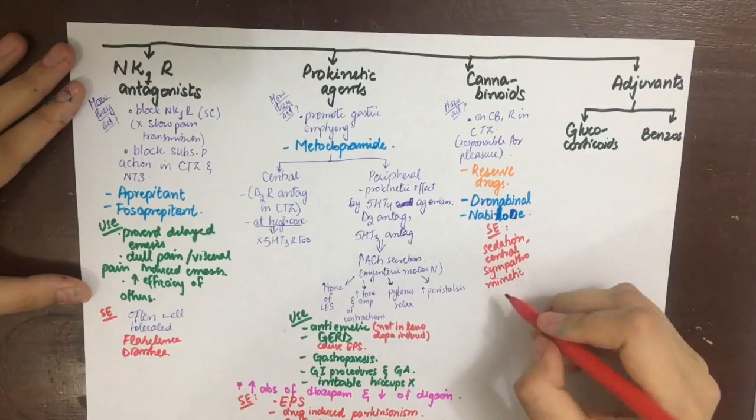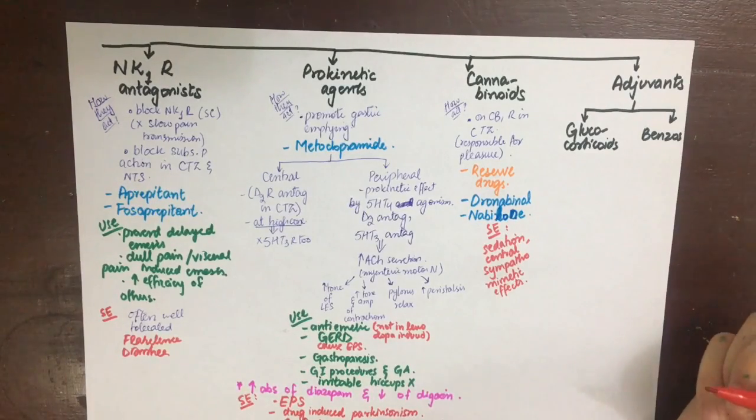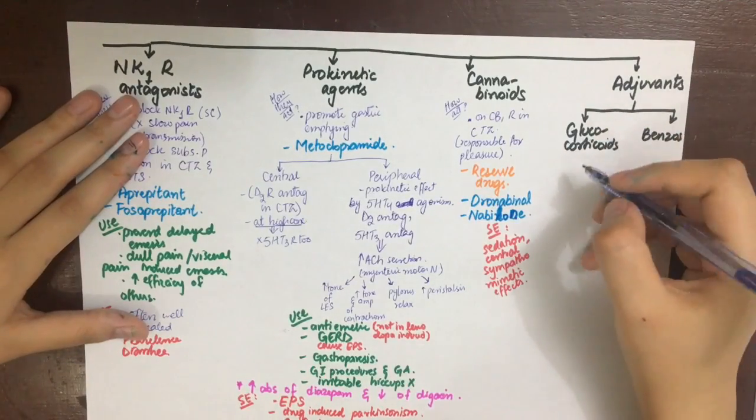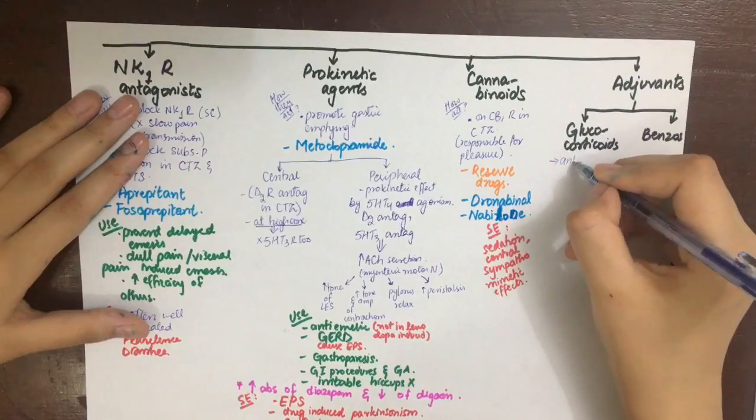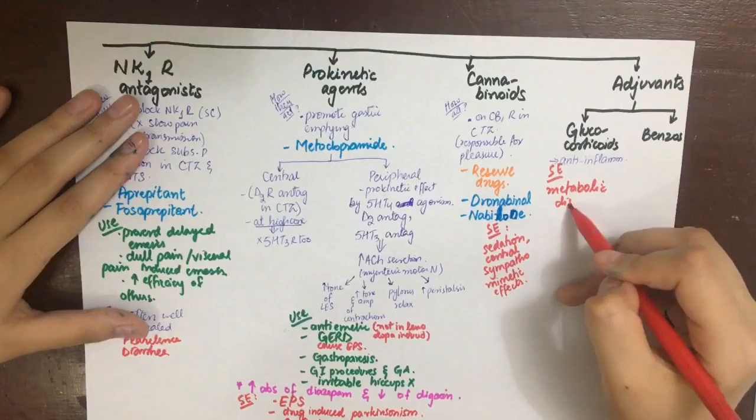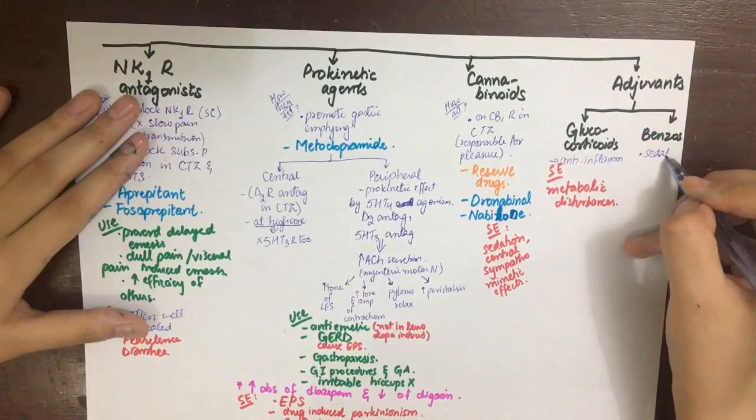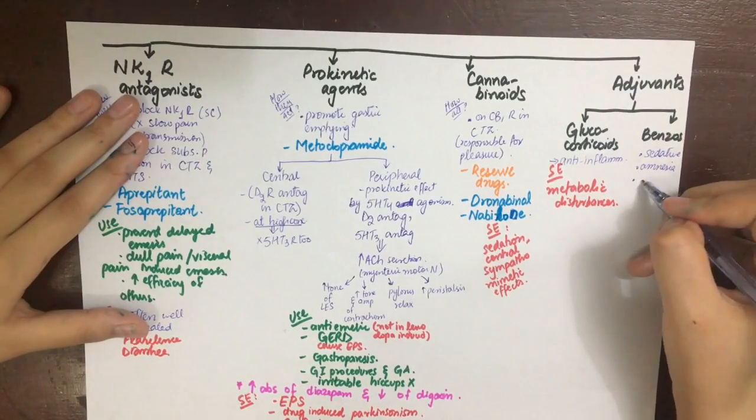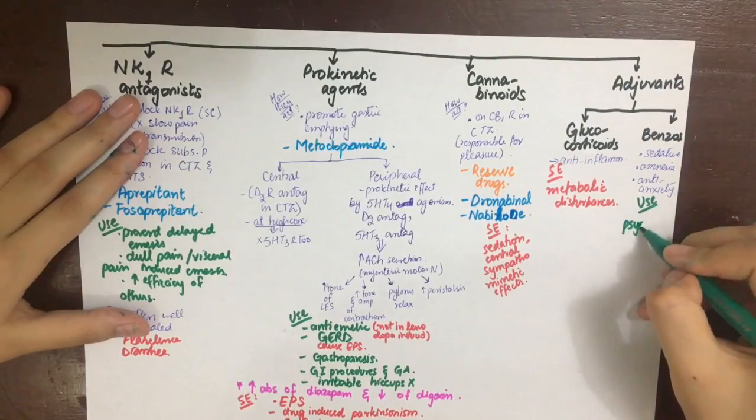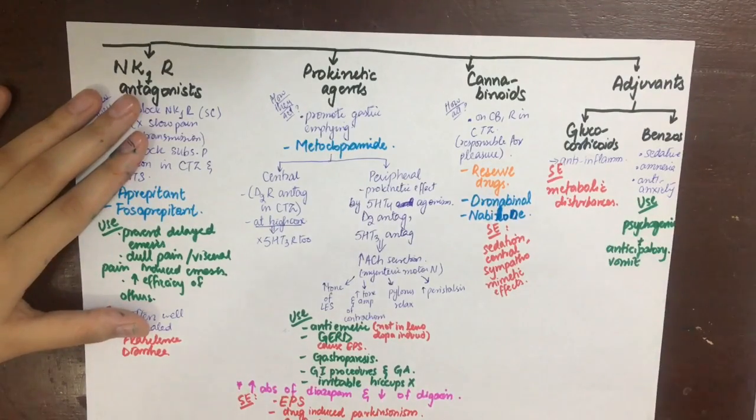Lastly, the adjuvants include benzodiazepines and glucocorticoids. Glucocorticoids act as anti-inflammatory and have severe metabolic disturbances as their side effects. Benzodiazepines act by their three properties: sedative, amnesic, and anxiolytic. They are used to control psychogenic or anticipatory vomiting—the one you have when you are about to open your pharmacology book. Their side effects are sedation and severe CNS depression can occur.